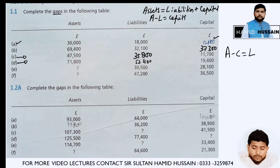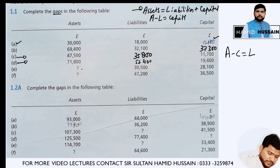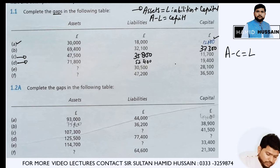In part E, the basic accounting equation is assets equals liabilities plus capital. Here capital and liabilities are given, so you need to find out assets. You need to add liabilities and capital to get assets: 28,100 plus 30,500 gives you 58,600.